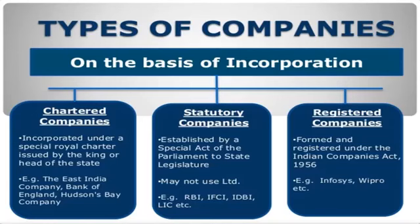Types of company on the basis of incorporation: chartered companies, statutory company, and registered companies. Under chartered companies, the company is incorporated under a special royal charter issued by the king or head of the state — example, East India Company, Bank of England, Hudson Bay Company. Statutory company is established by a special act of the parliament or state legislature; may not use 'limited' — example, RBI, IFCI, IDBI, LIC etc. Registered company is formed and registered under the Indian Companies Act 1956 — example, Infosys, Wipro, etc.